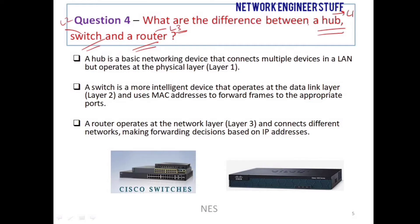Routers operate at Layer 3 and use Layer 3 addresses — that is IP addresses — to make their forwarding decisions. Routers are used to connect different networks, so whenever you want to communicate between networks, you use a router.